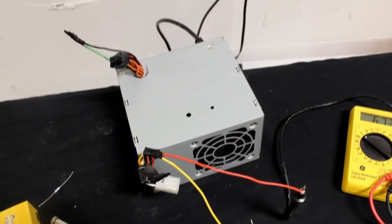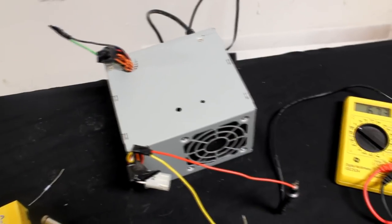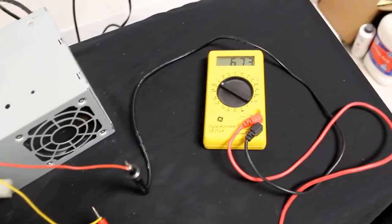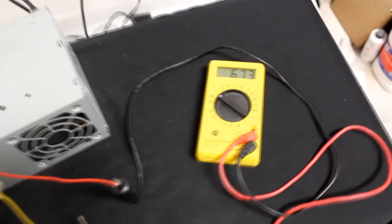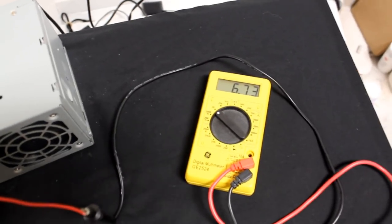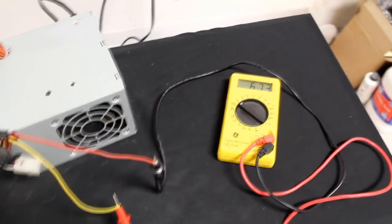Alright, so I tied the green and black wires together to keep the power supply on. And then I tested the red and yellow wires there, and I have a potential of about 7 volts across those leads. So this power supply is ready to go.